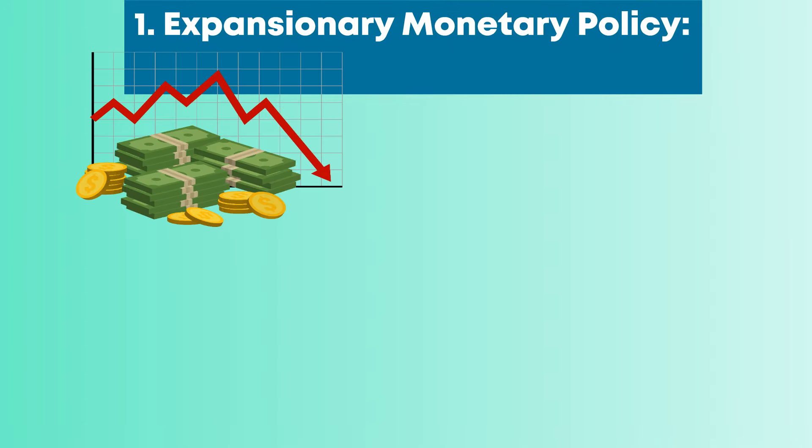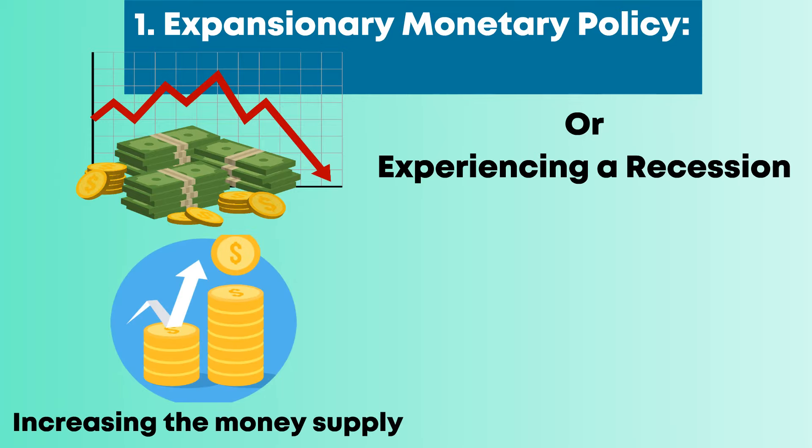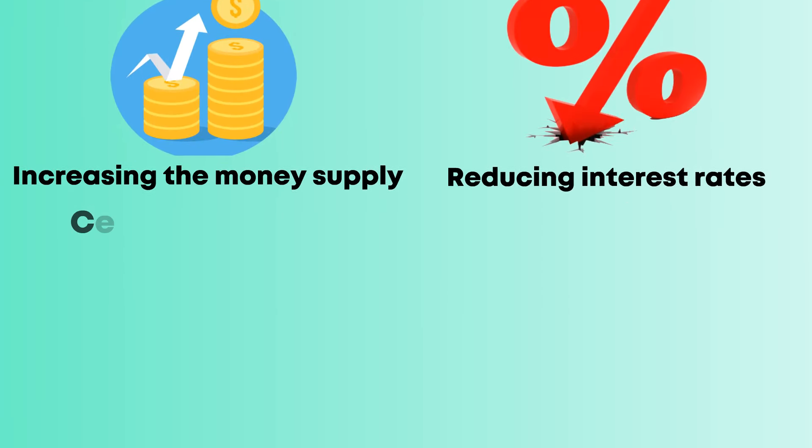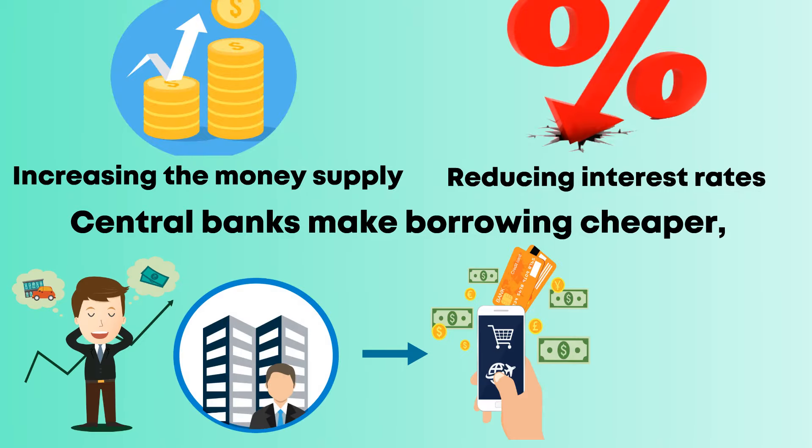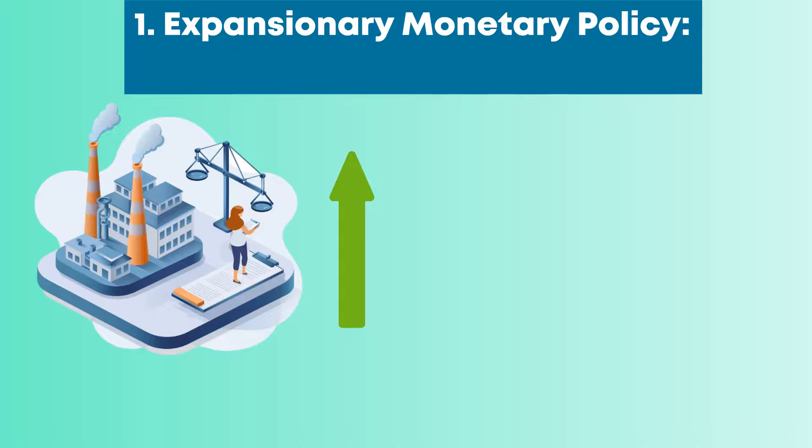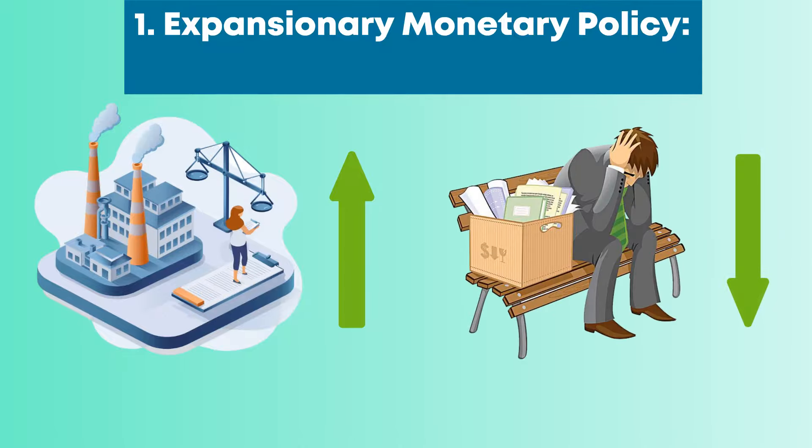Expansionary monetary policy is applied when the economy is sluggish or experiencing a recession. By increasing the money supply and reducing interest rates, central banks make borrowing cheaper, encouraging consumers and businesses to spend and invest more. This can help boost economic activity and reduce unemployment rates.